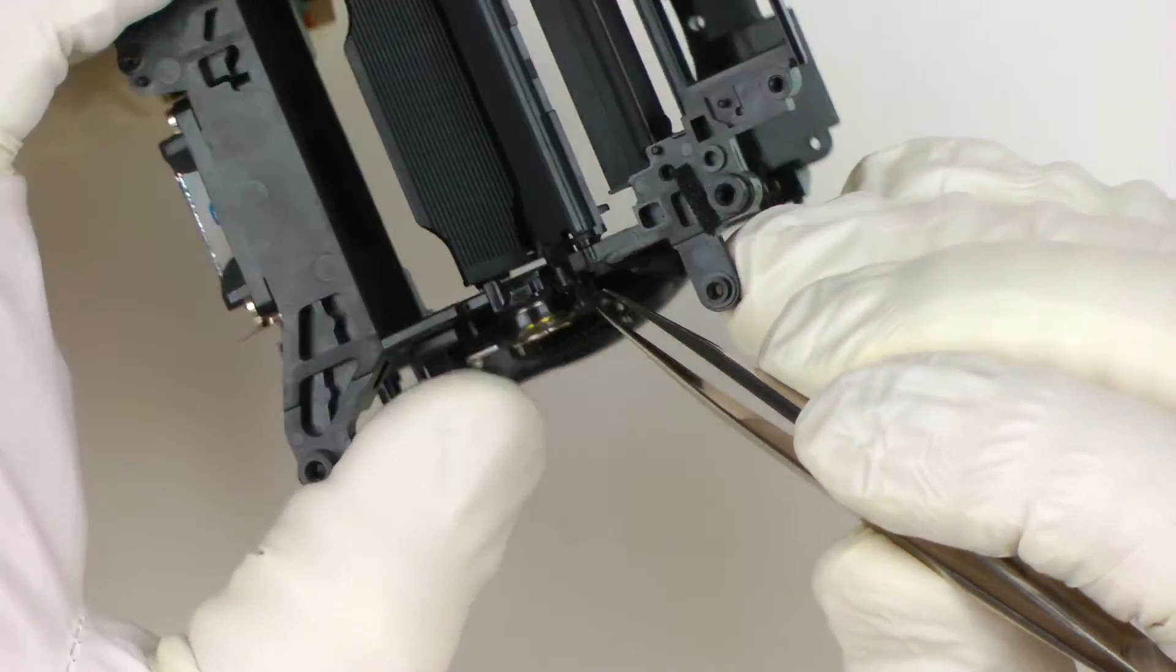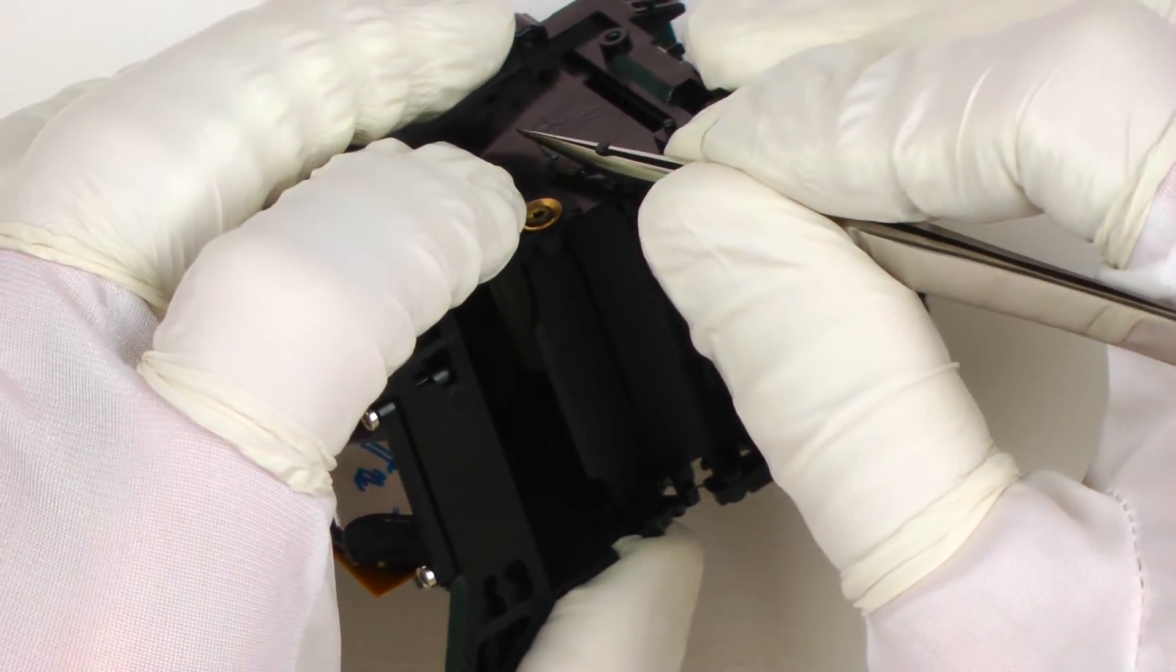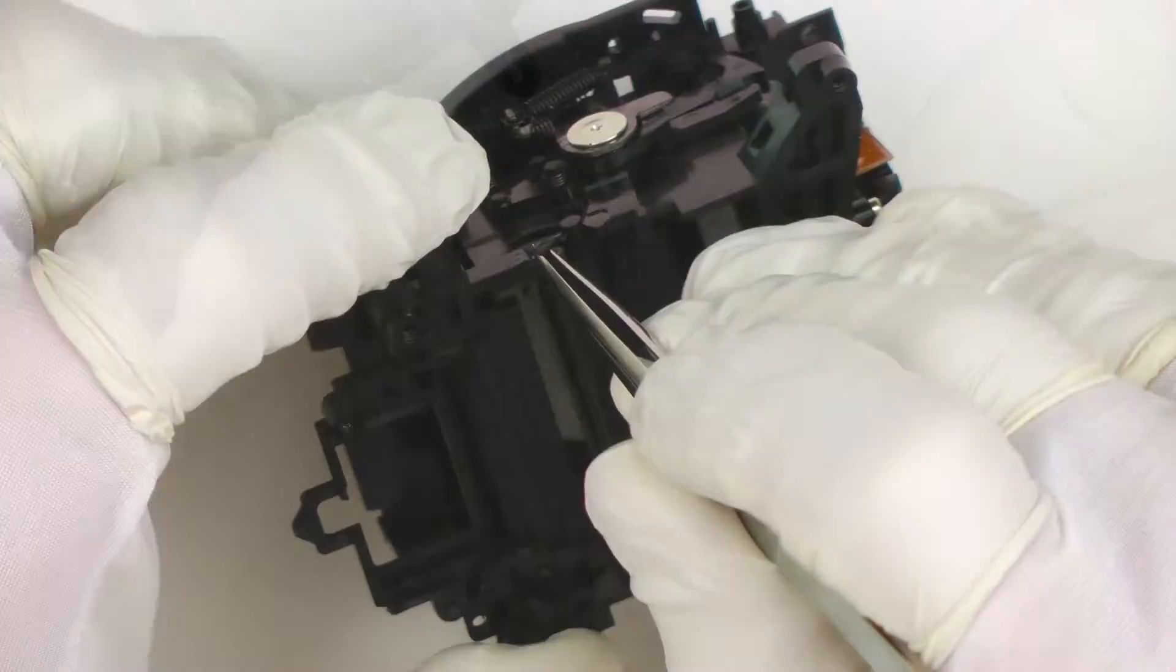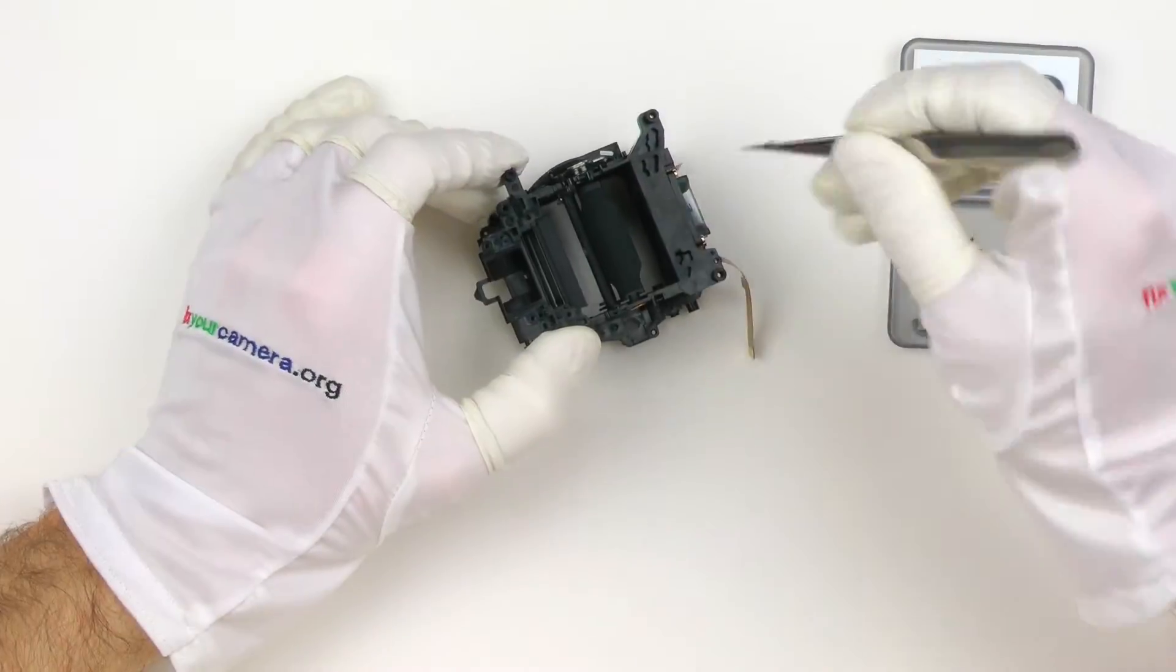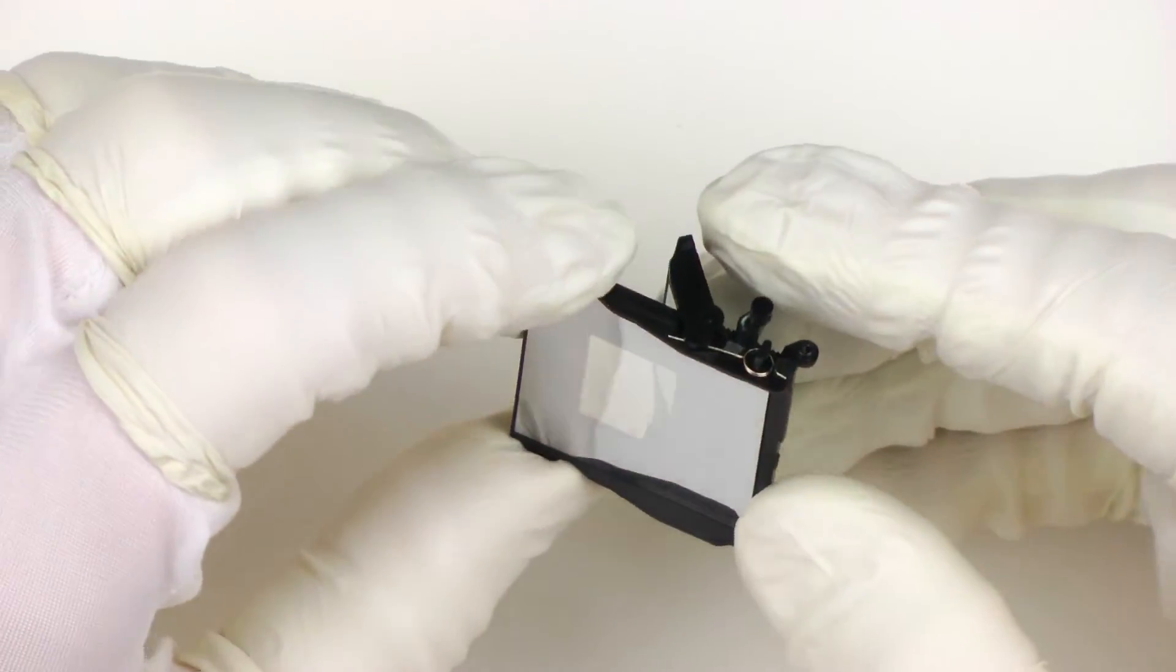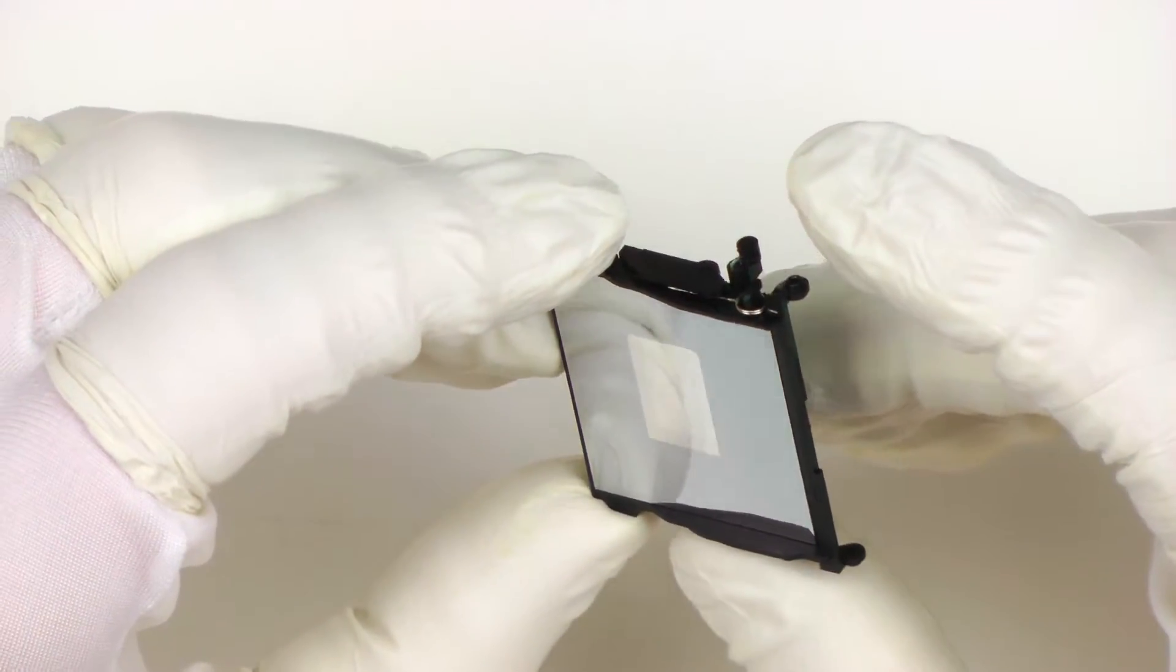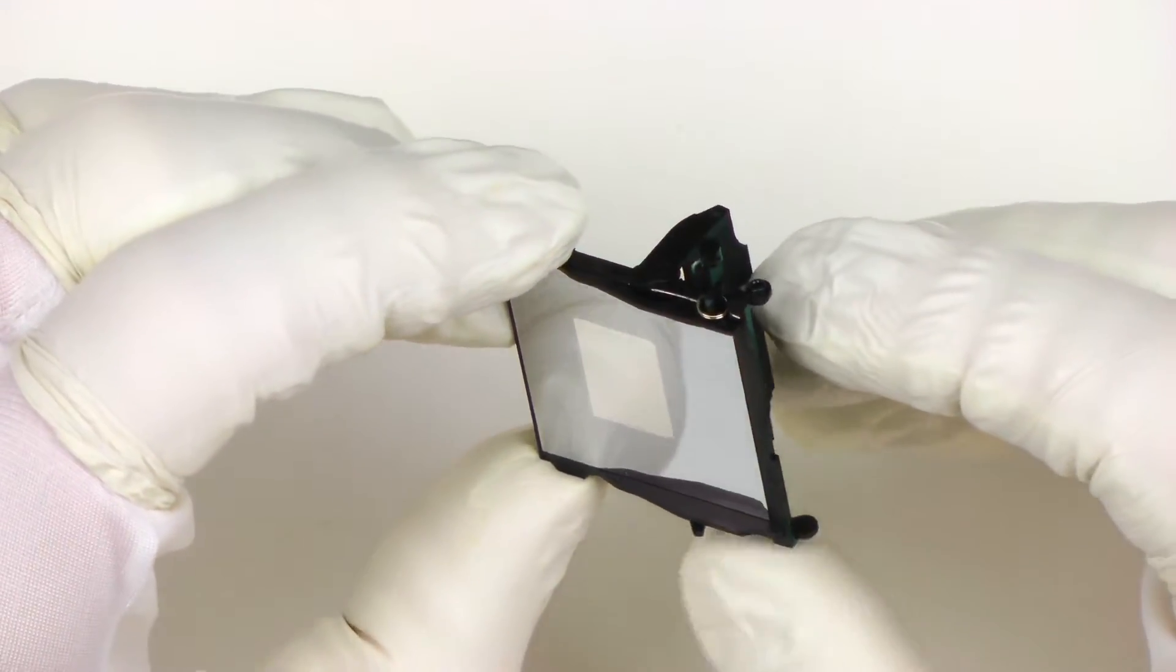Mirror and submirror assembly. In this model, these are held just by two metal pins and these pins are secured by a tiny dot of glue on each one. So let's remove them. Notice the spring that's mounted on the main mirror. It's pushing the submirror to either one of two positions, so it doesn't stay in the middle.